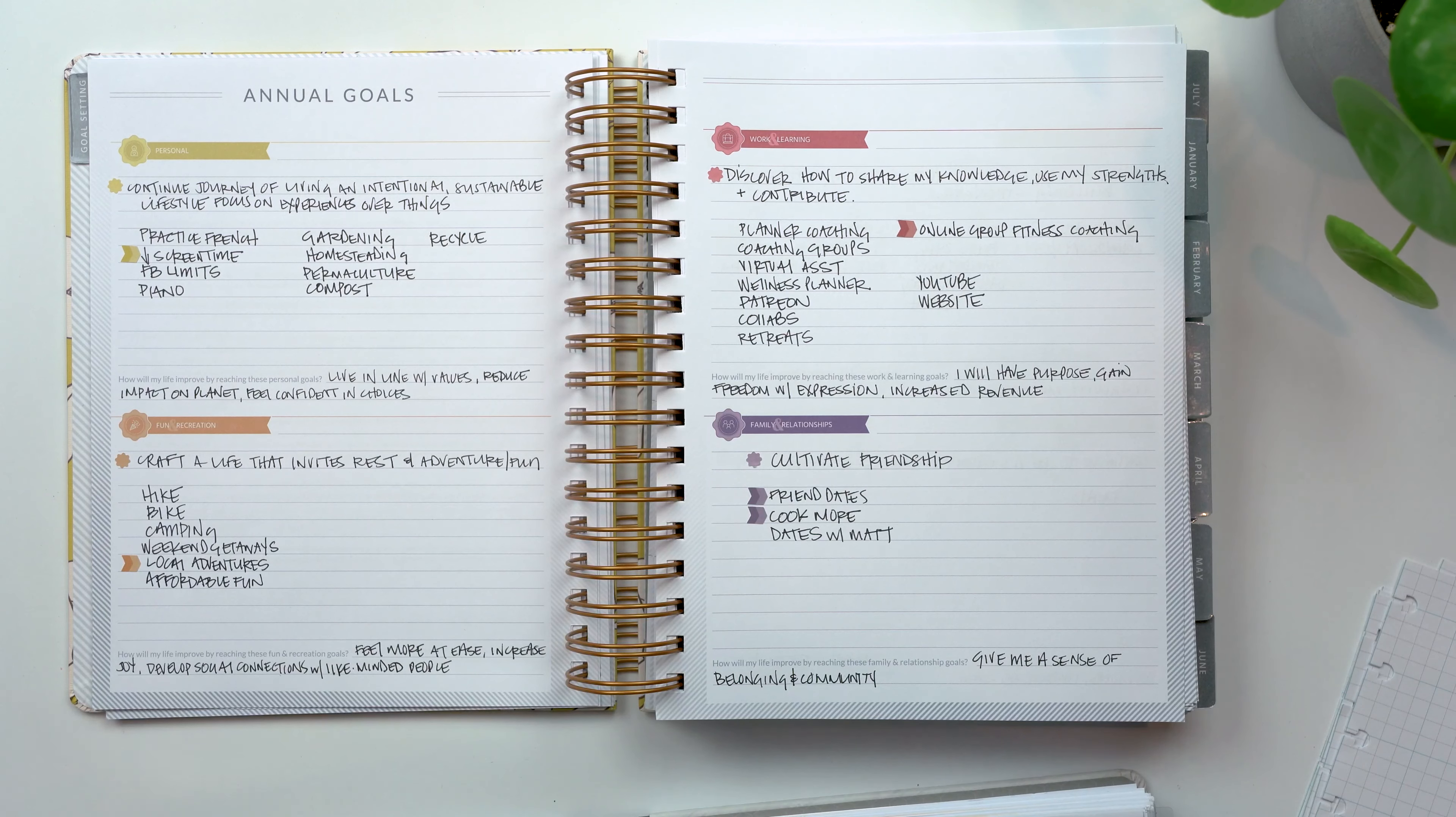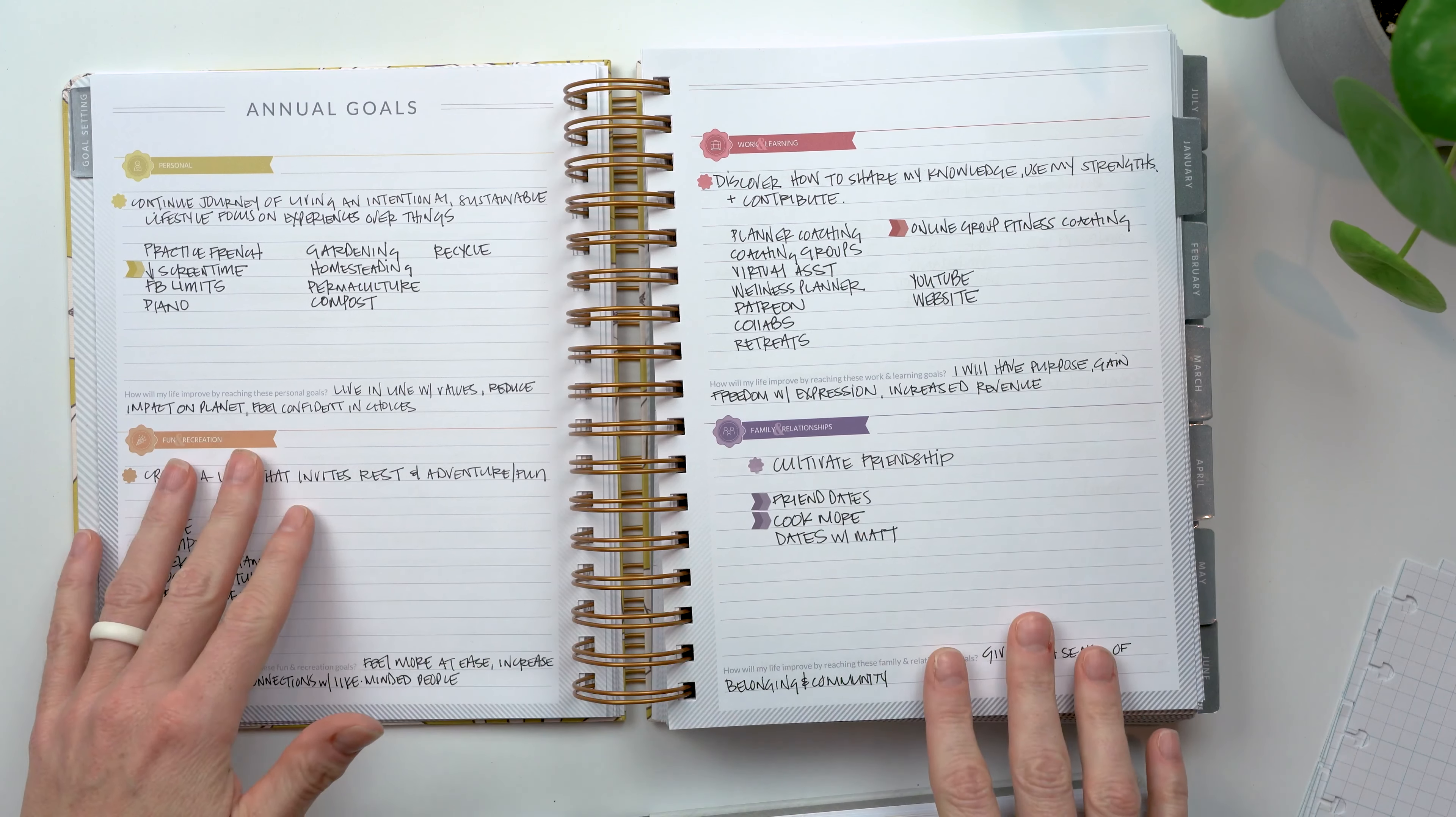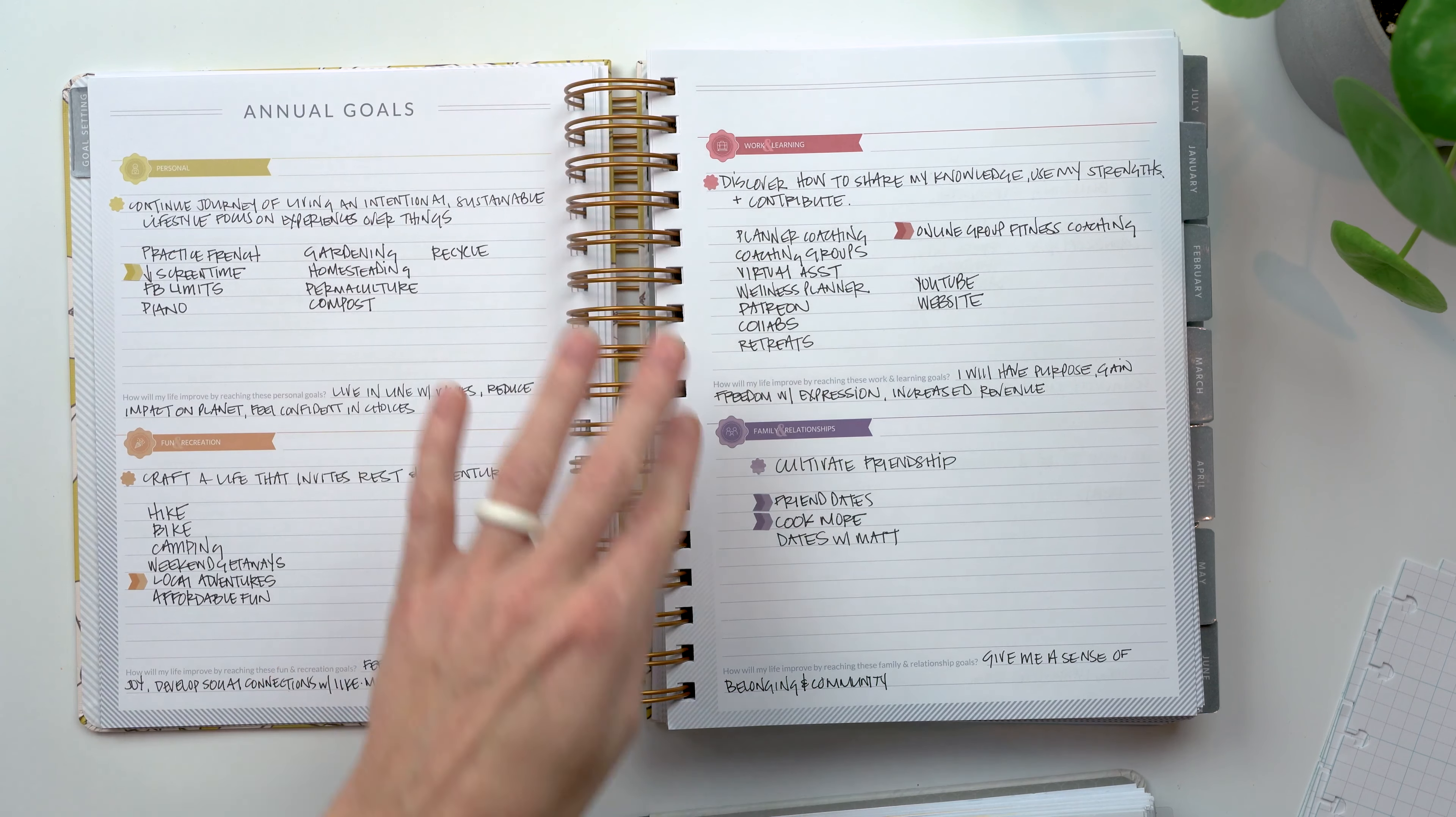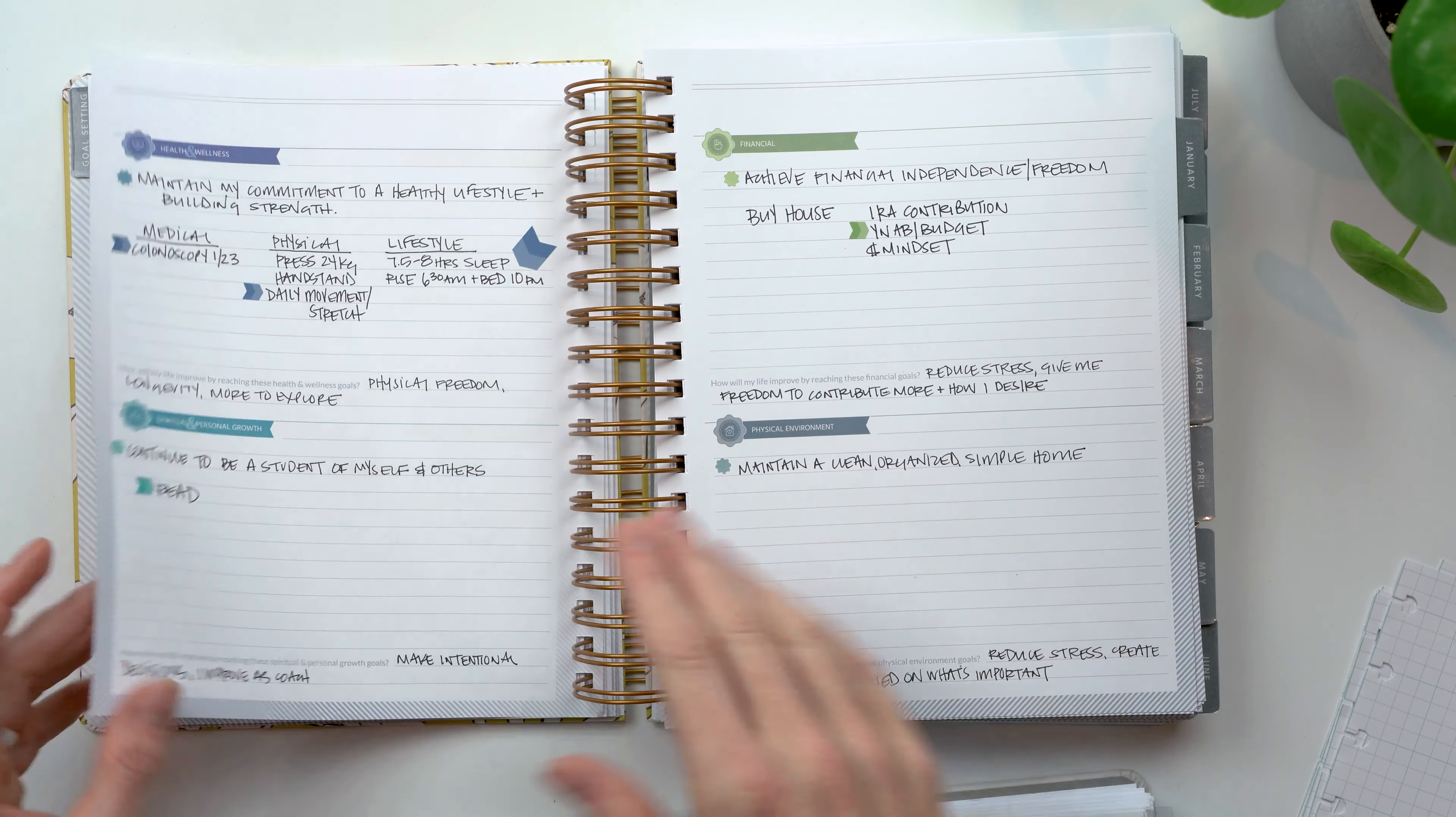Then you have Moxie life, which to me is like, oh my God, eight areas of life. Do I need to focus on that many? But I think the way they're broken out in the category she picked makes sense for most people a little bit more so than the Inkwell press. So you have personal, fun and recreation, work and learning, relationships, health, spirituality and personal growth, financial and physical environment.